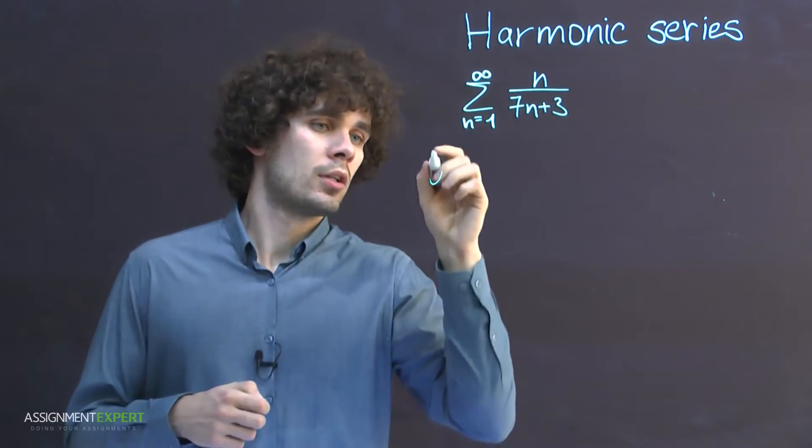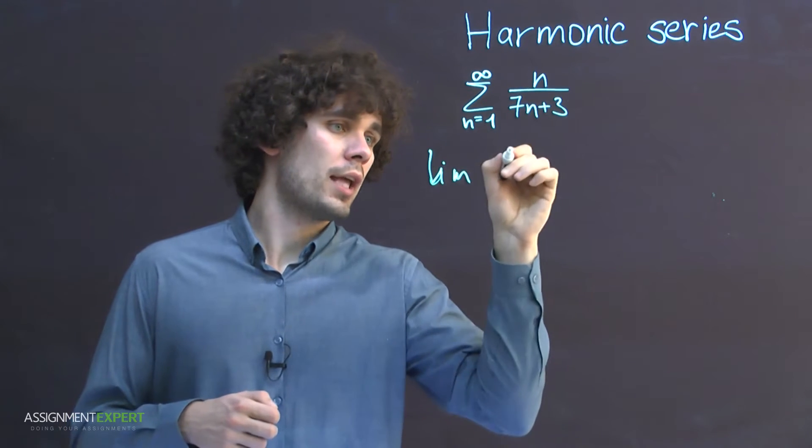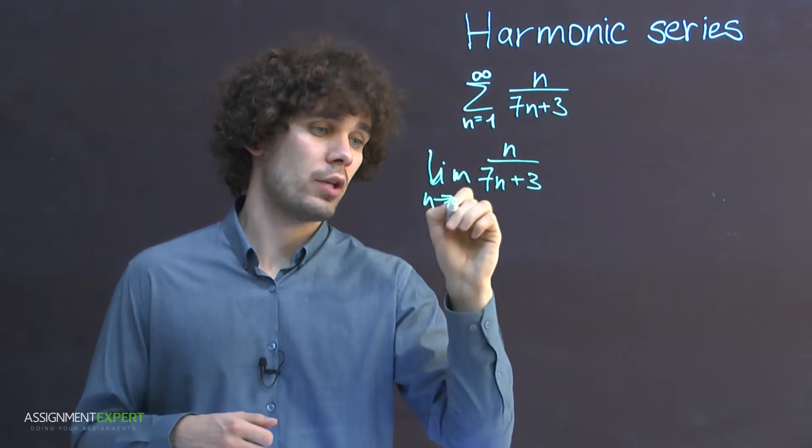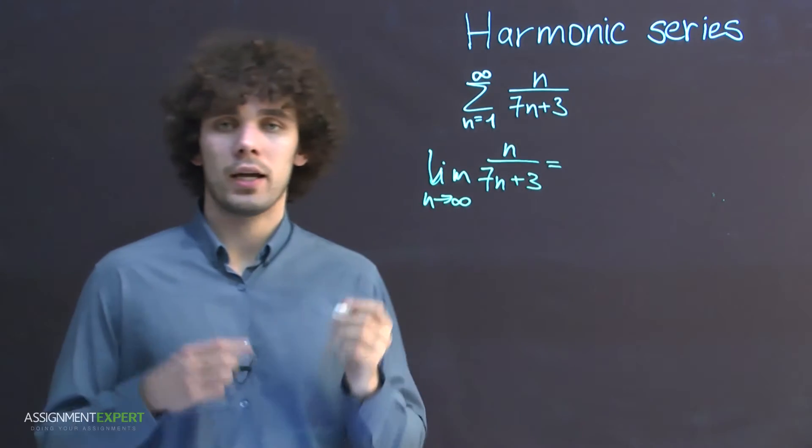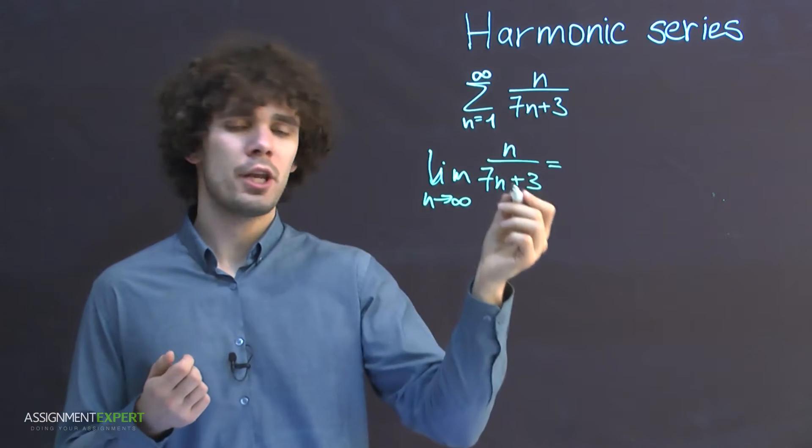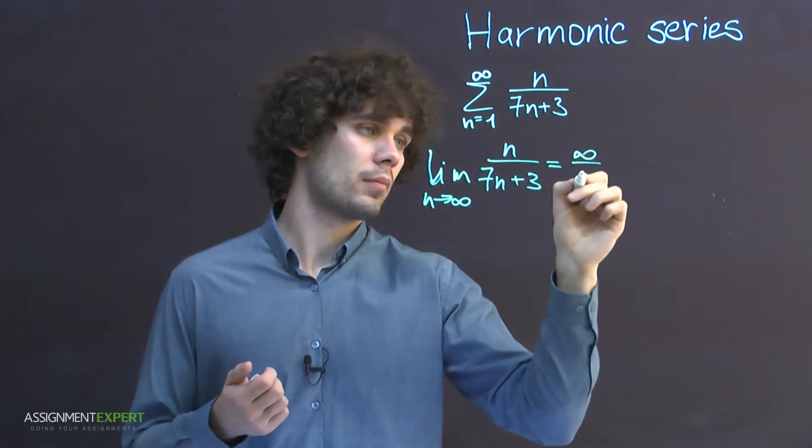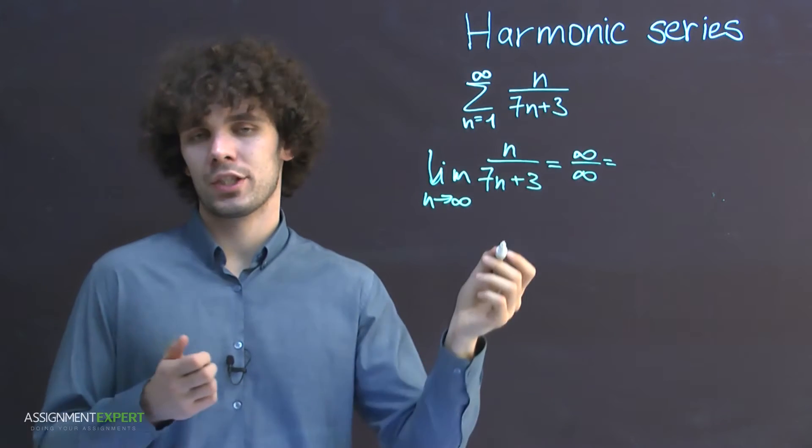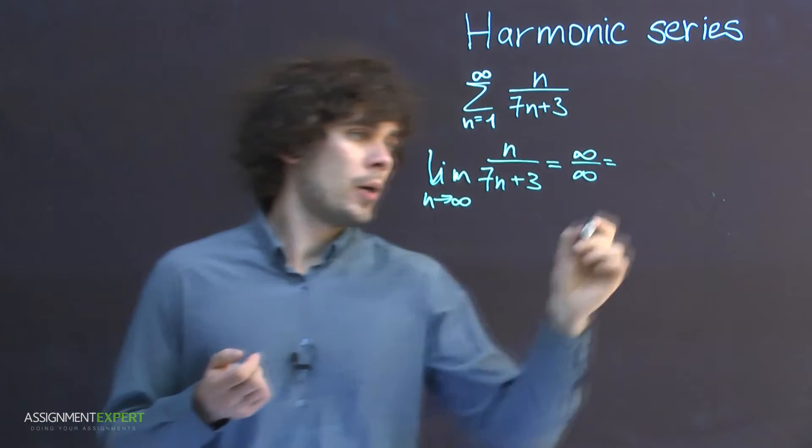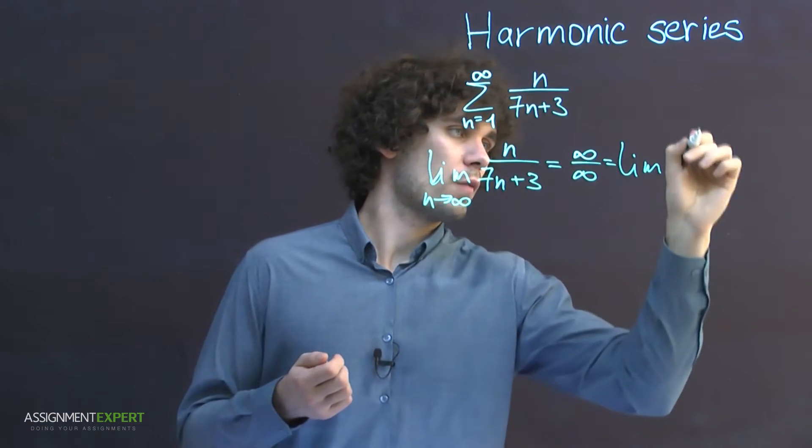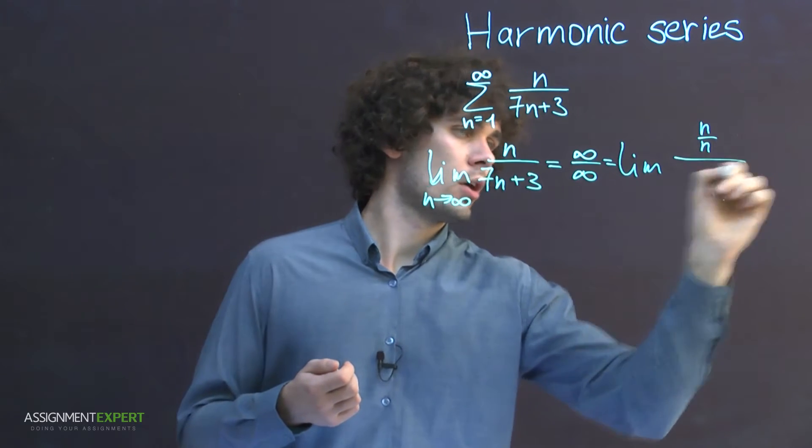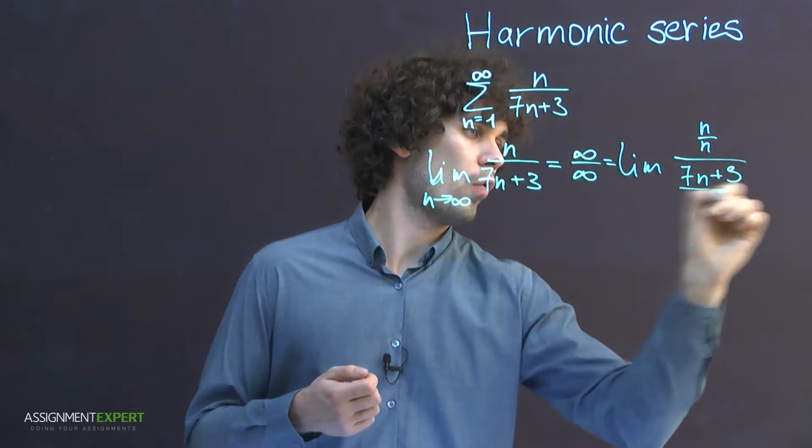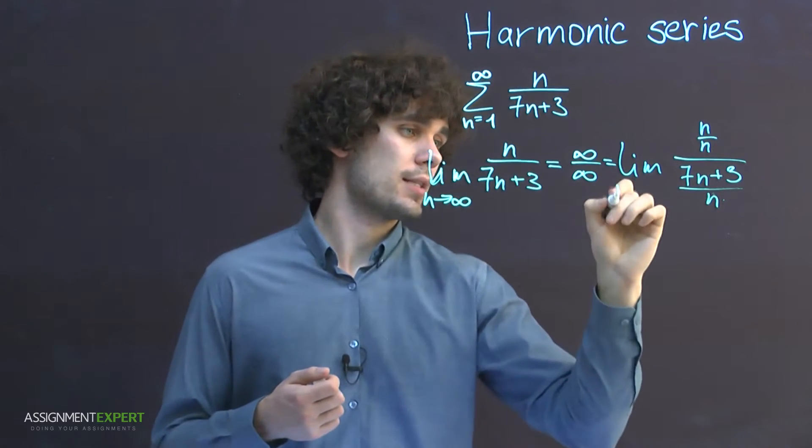So, limit of n over 7n plus 3 where n tends to infinity. At first glance, it looks like infinity over infinity. But let's divide numerator and denominator by n. We get limit of n/n over (7n+3)/n where n tends to infinity.